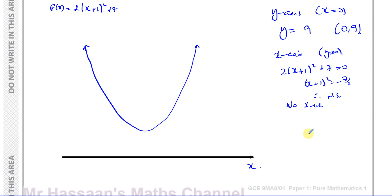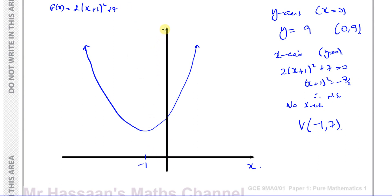Now, the vertex is found by taking the value of x that makes the bracket zero, which is negative 1, and whatever's left outside is 7 — that's the y-value of the vertex. So the vertex is (−1, 7). That means x is negative 1 and y is 7. The y-axis I'll draw over here. That's the origin, that's 7, and that's 9. So the vertex is (−1, 7), the y-intercept is (0, 9), and there's no x-intercept. That's the sketch of the graph.